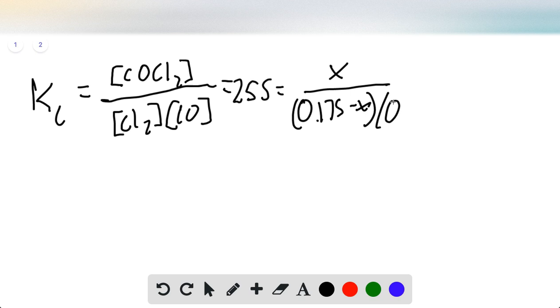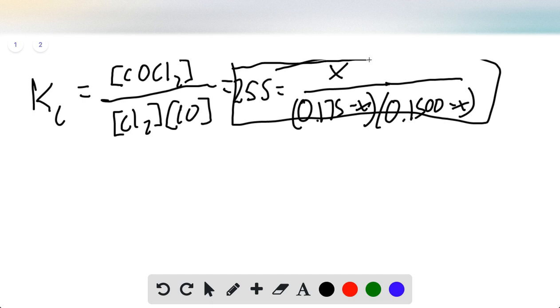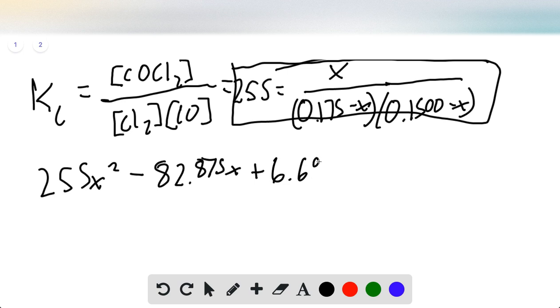Now we take this equation and rearrange it to get a quadratic formula. After doing the appropriate algebra, we end up with 255X squared minus 82.875X plus 6.69 equals zero. So now we can use the quadratic formula to find the value of X.